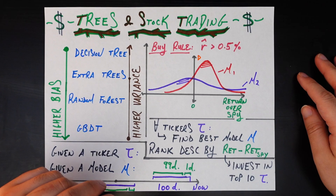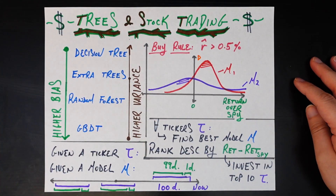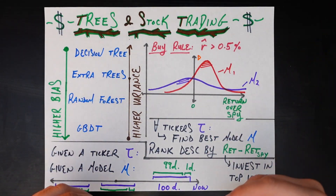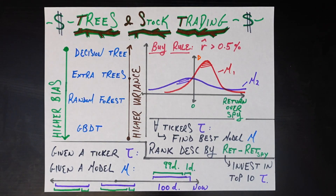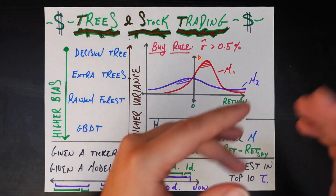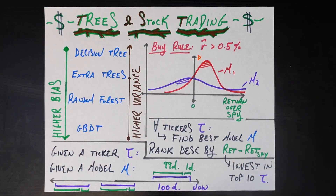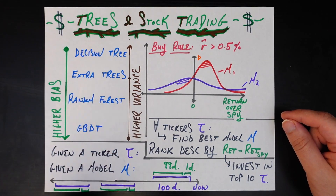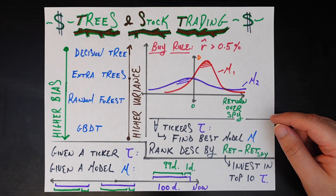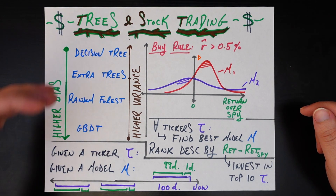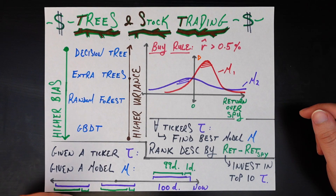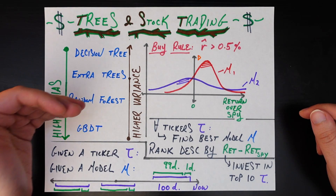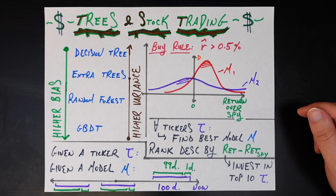Obviously I'm making tons of assumptions there, but that is basically in a nutshell why we would expect trees to work for stock trading and also why we would expect them to fail miserably. Now let's get into the actual method, which I'm going to make more rigorous today based on your comments from previous videos. We're going to be using four different tree-based methods: decision trees, extra trees, random forest, and GBDT.